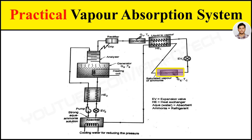The refrigerant absorbs heat in the evaporator and passes to the absorber through the heat exchanger. In the absorber, cooling of the refrigerant takes place by the weak solution from the generator, which absorbs more ammonia. The mixture from the generator and the strong ammonia are mixed in the absorber to form a strong aqua ammonia solution.